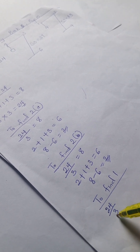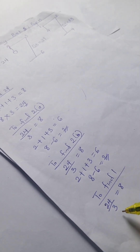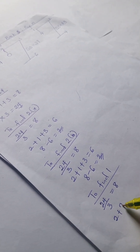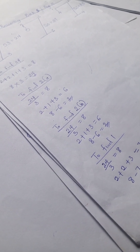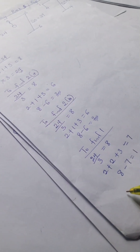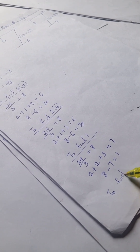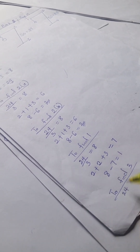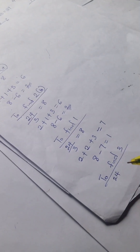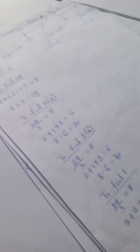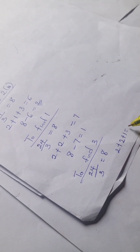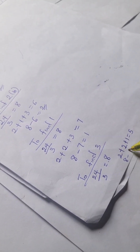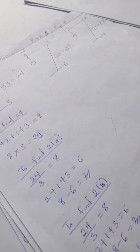To find the 1, we have 24 divided by 3, that gives us 8. Then two plus two plus two plus three gives us 7. So 8 minus 7, we have our 1. To find the 3, we have 24 divided by 3, giving us 8. Then two plus two plus one gives us 5. So 8 minus 5, we have our 3.